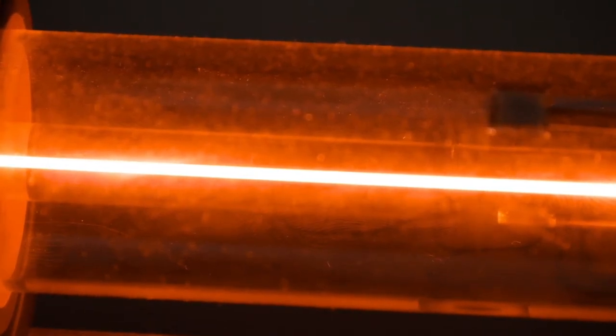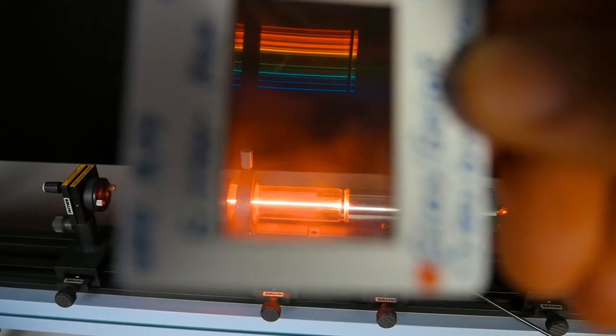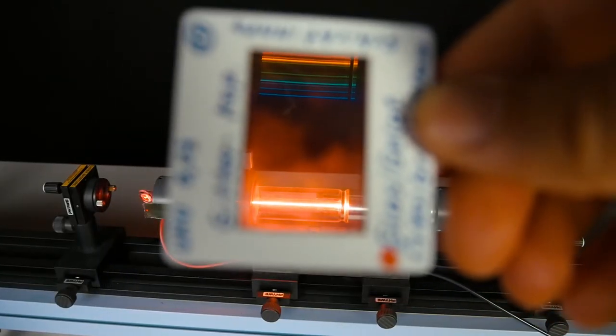If you hold an optical grid in front of the laser and look through it at the luminous gas cylinder, you can see its light broken down into a discrete line spectrum. You can see the so-called laser modes.